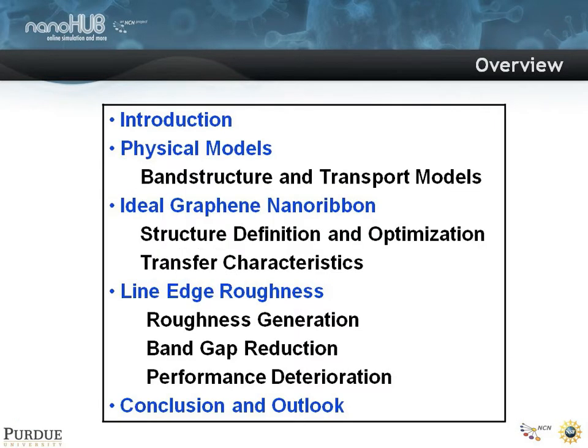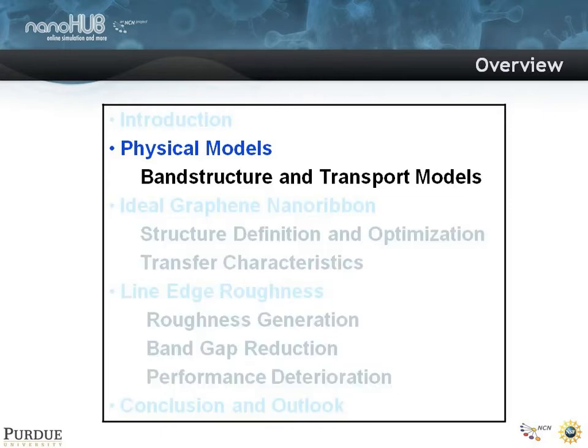I'm going to start out with giving you some band structure and transport models and talk about an ideal graphene nanoribbon first, then line edge roughness, and then a conclusion and outlook.